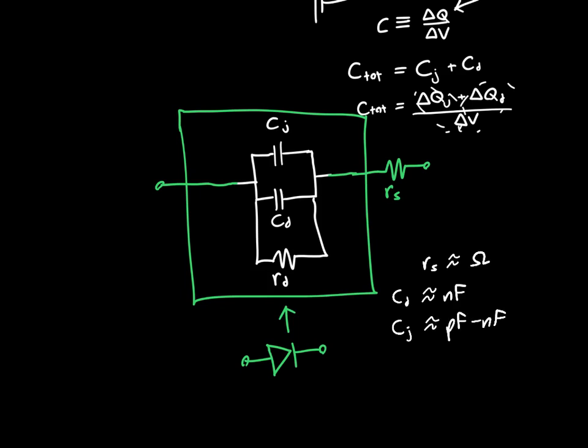Sometimes the junction capacitance is much smaller in the picofarad range or the nanofarad range, depending on the diode. And RD is typically in the tens of ohms.